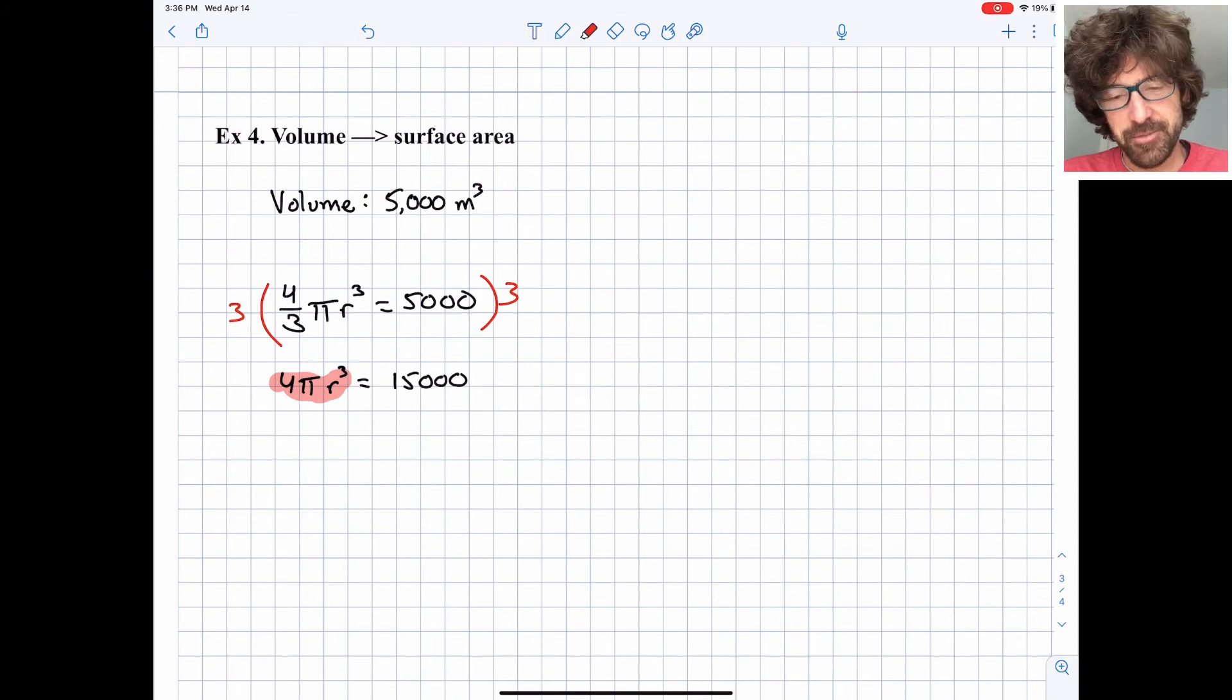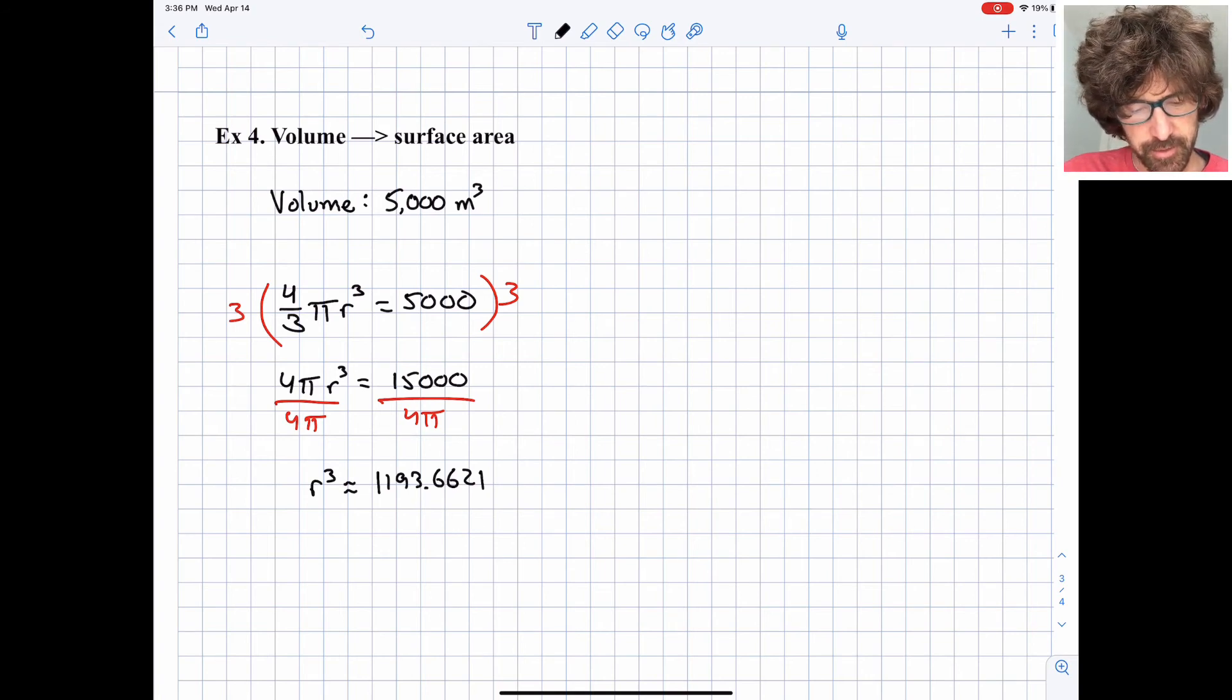So let's keep going and solve for r. I'm going to divide both sides by 4π. And I get r³ is equal to, and I'm going to get decimal approximations on this one rather than keeping it exact. And so r³ is 1193 point, and I'm going to go 4 decimal places. I just don't like rounding very much in the middle of a problem. So I'll go 4 decimal places, and then at the very end, I'll round it to a couple decimal places.